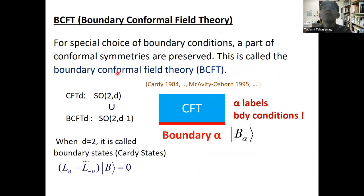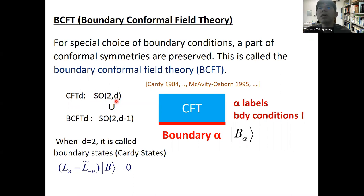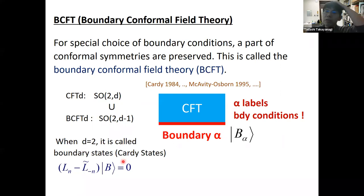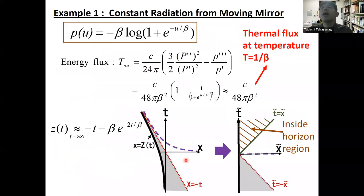Because this is a time-dependent background, we should be careful about the definition of vacuum. Incoming vacuum is not an excited state from the viewpoint of outgoing waves. That's the basic analysis of why we only do conformal mapping on the u coordinate. After mapping, we have just a half-space conformal field theory — the standard setup of boundary conformal field theory (BCFT). In BCFT, special boundary conditions preserve part of the conformal symmetry — a CFT on a d-dimensional manifold has SO(2,d) symmetry, and with a boundary, a subgroup SO(2,d-1) is preserved.